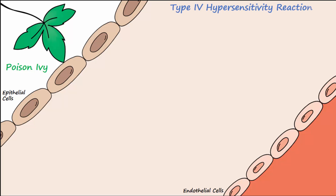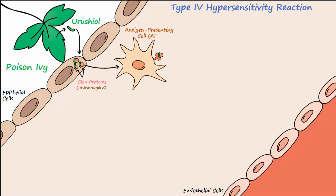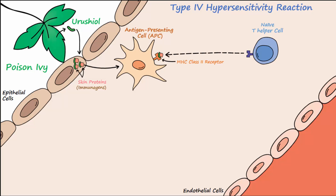Poison ivy causes a rash or reaction in the skin — this is a type 4 hypersensitivity reaction. Poison ivy contains a compound known as urushiol, which binds with proteins in the skin and alters them. The immune system now recognizes these changed proteins as foreign. These immunogens are recognized and processed by an antigen presenting cell, or APC, and presented to a naive T helper cell.